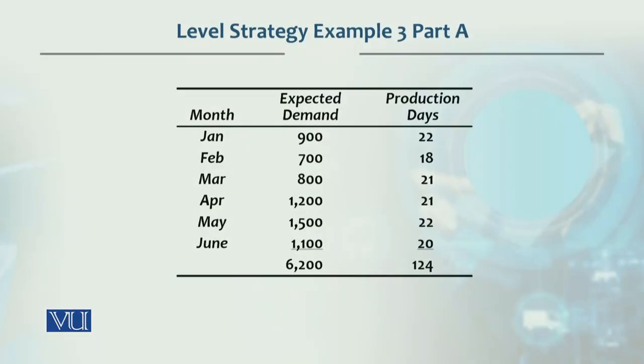We have the following data: January 900 units with 22 days, February 700 with 18 days, March 800 with 21 days, April 1200, May 1500, and June 1100 with 20 days for production. The total demand across these six months is 6200 units, and 124 days are available for production.